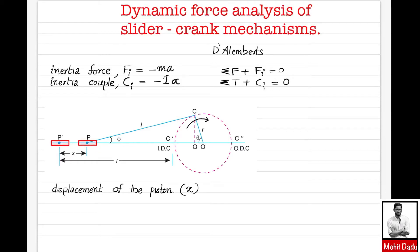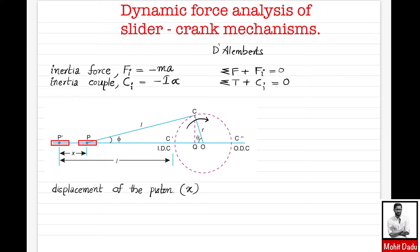Welcome back to another lecture on dynamics of machinery. In this video we will be discussing the dynamic force analysis of a slider crank mechanism. In static force analysis we do not consider the effect of accelerating masses — we do not take inertia effects. If the components of machines are accelerating, they will be associated with inertia forces as well as inertia couples. Inertia force magnitude is mass times acceleration, acting in the opposite direction to acceleration, represented as Fi = -ma. Similarly, for rotating components, inertia couple is I·alpha, in the opposite direction to angular acceleration.